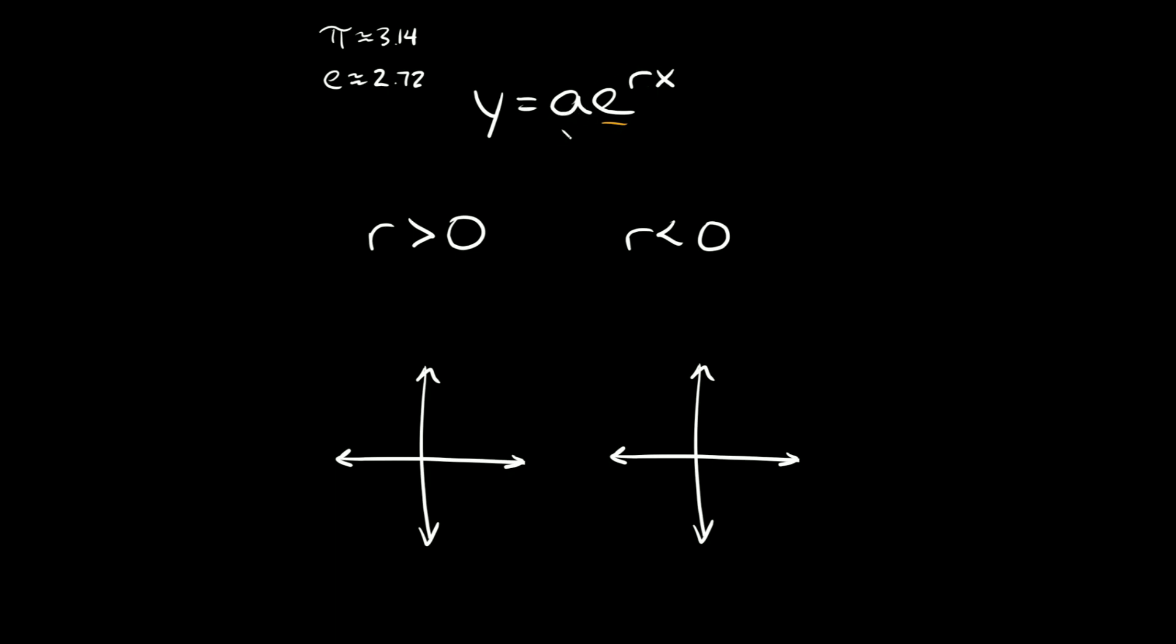Now the other two variables we need to look at are a and r. Whenever we're talking about exponential growth and decay, this number a, or this letter a, represents a positive number. So a is always going to be greater than 0 in this case.